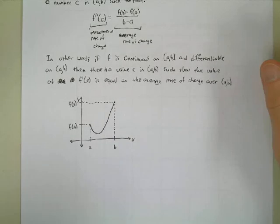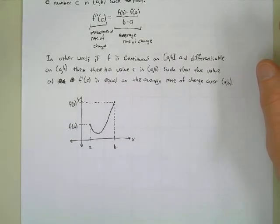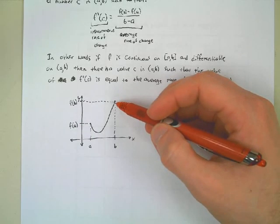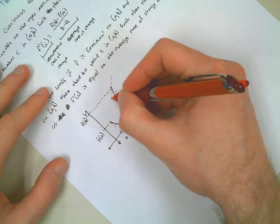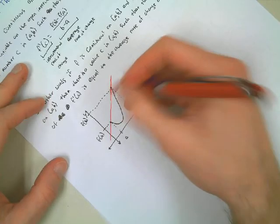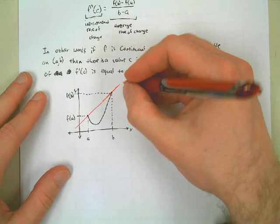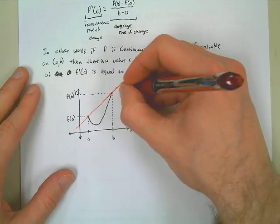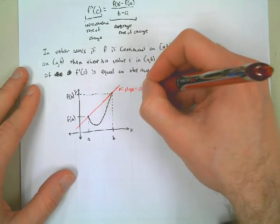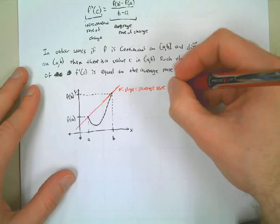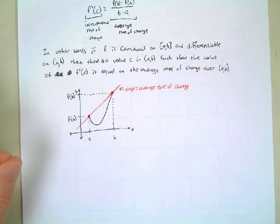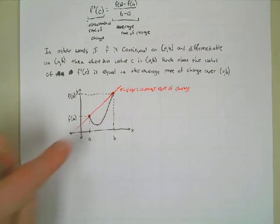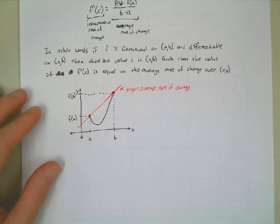The average rate of change is the slope between the two points — (A, F(A)) and (B, F(B)) — the endpoints of our interval. So the slope would be the slope of the line connecting those two points, which we can find using the slope formula. That's the average rate of change over this interval for this function.